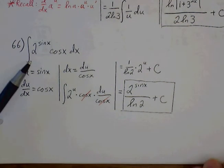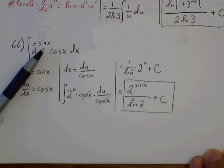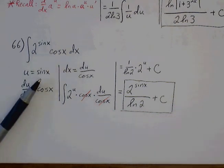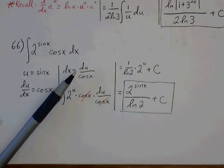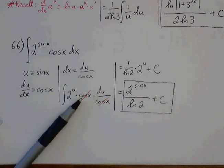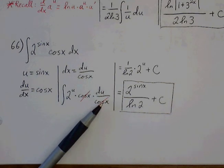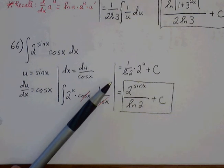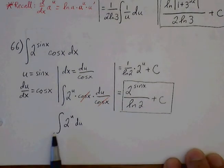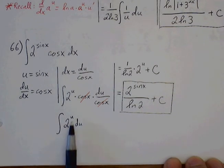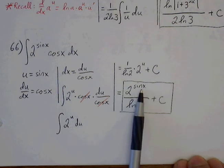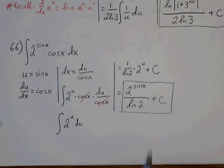Problem 66: integral of 2 to the sine x times cosine of x dx. We can see this is in the form a to the u. If we let u equal sine of x, then du equals cosine of x dx, so dx equals du over cosine. Making substitutions: sine x gets replaced with u, dx with du over cosine x. The cosine cancels out, leaving the integral of 2 to the u du. Applying the rule for a to the u gives 1 over natural log of a times a to the u plus C. Replacing u gives 2 to the sine x over natural log of 2, plus C.